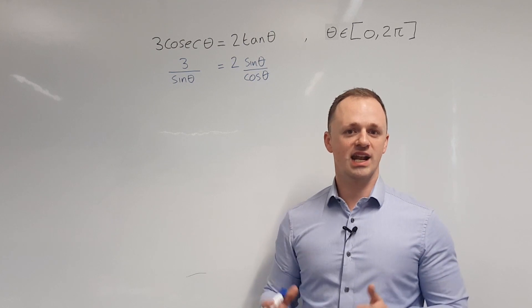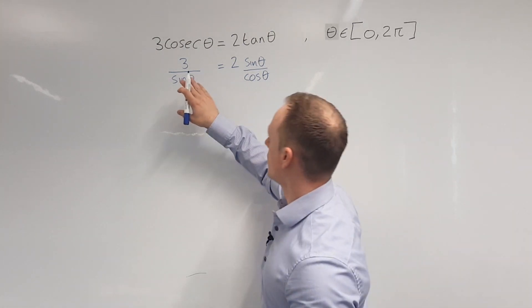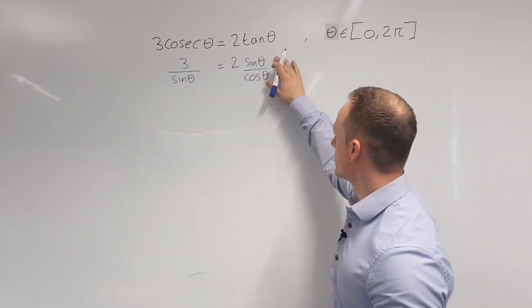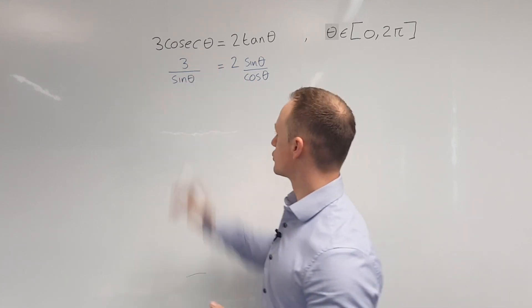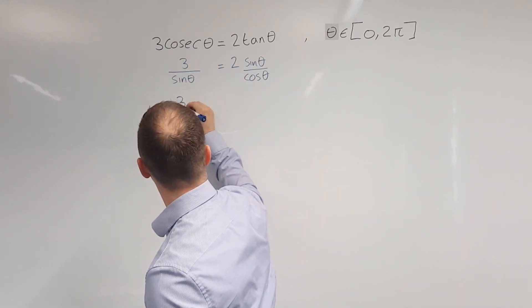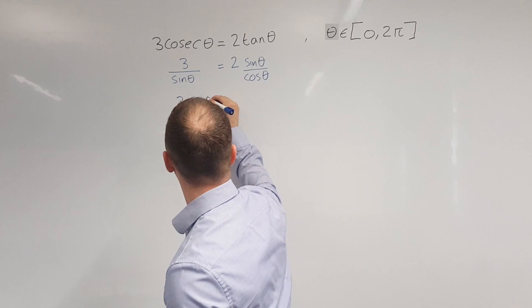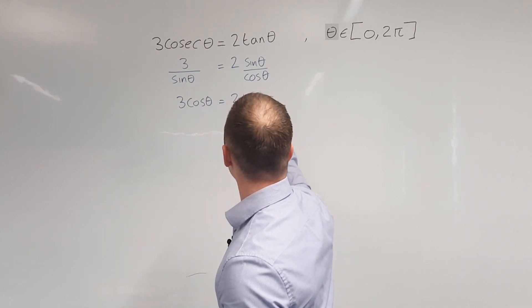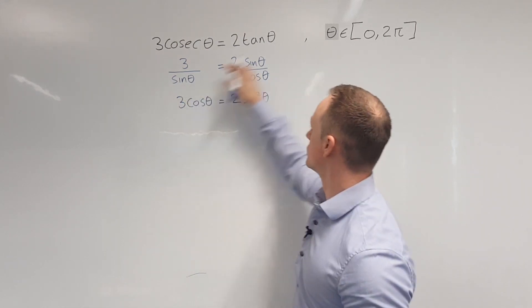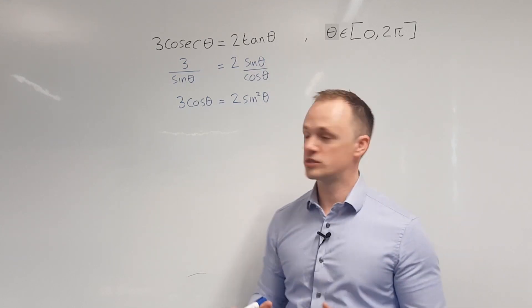From here, I'm going to clear the fractions. So I'm going to multiply up here by sine theta, and I'm going to multiply up by cos theta. That's going to give me 3 cos theta equals 2 sine squared theta, because I've got sine theta multiplied by sine theta.